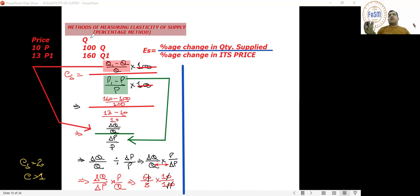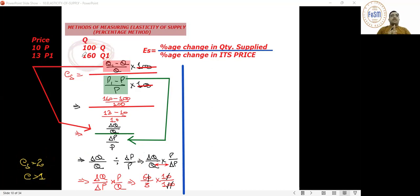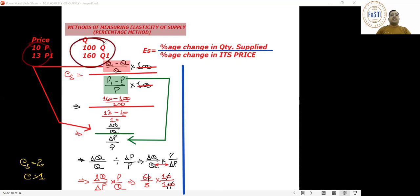The market price rose 30%, but we as shopkeepers became interested in selling 60% more. A small price increase makes us want to sell much more. This indicates either a long period or a short period situation. Price change is small but quantity change is large.